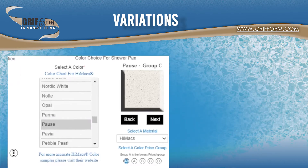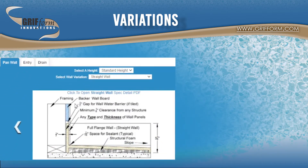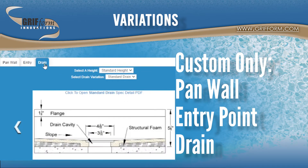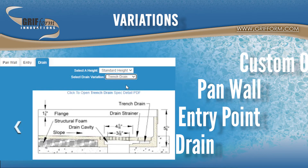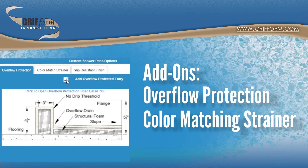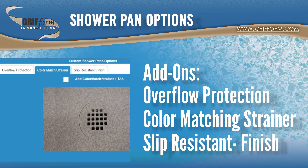The next area is the variation area. This feature is exclusive to the custom shower pan builder. Through our custom builder variation section, you can choose different pan walls, entry points, and drain options.